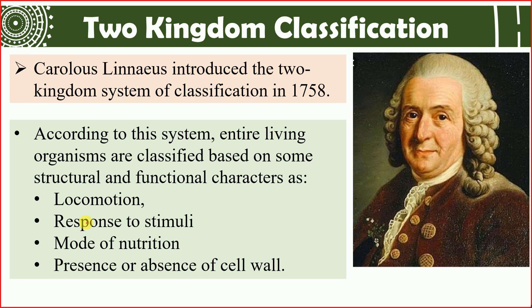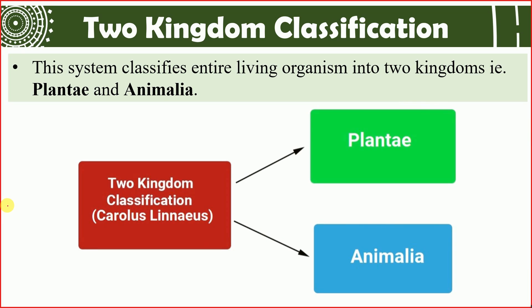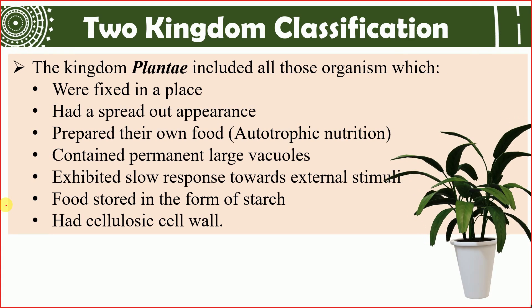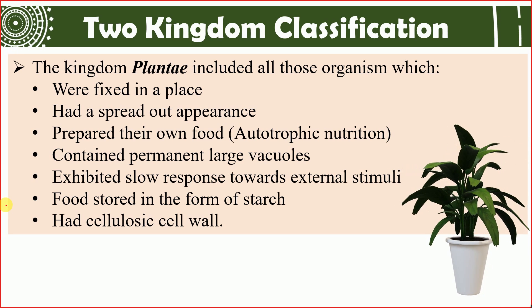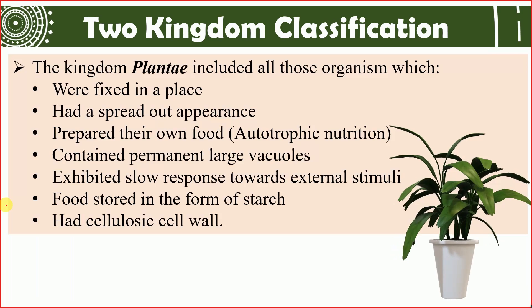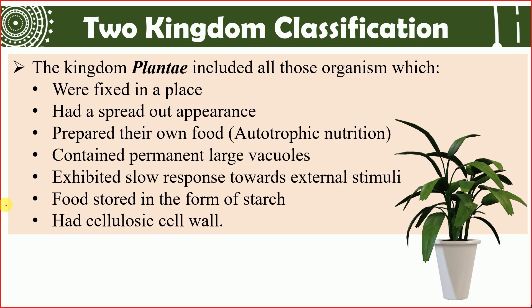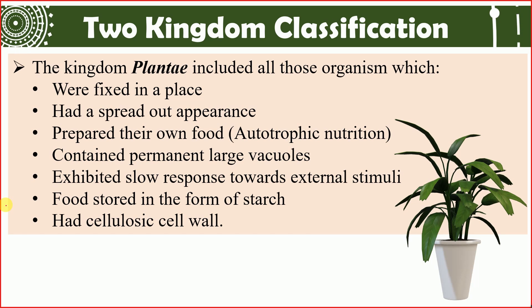The kingdom Plantae includes organisms which are fixed at one place — they are immobile and sedentary, with roots fixed on the substratum throughout their life. They also have a spread-out appearance, with branching roots containing secondary and tertiary roots, stems dividing into branches, and branches producing leaves.